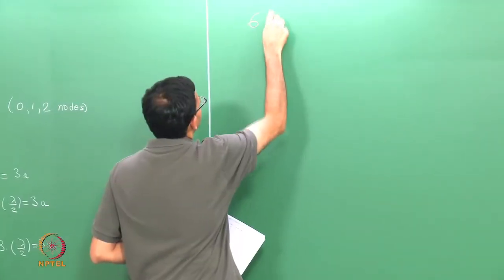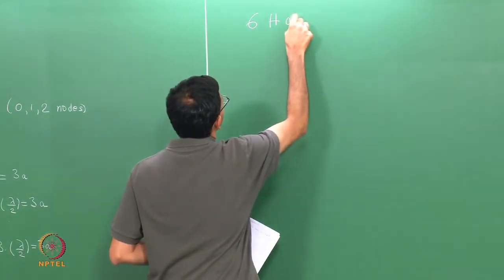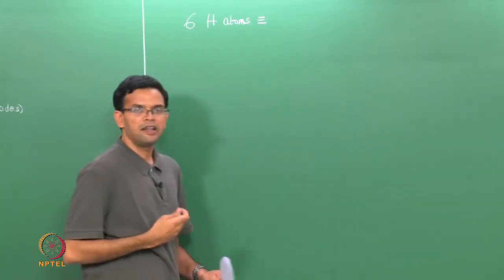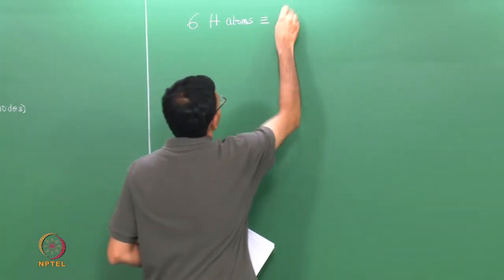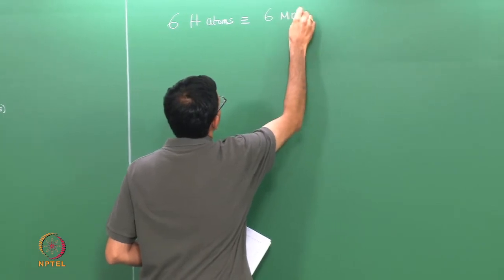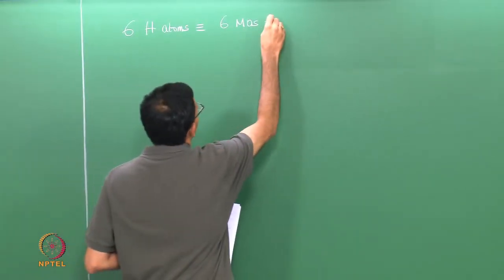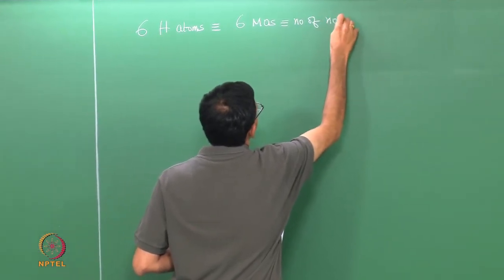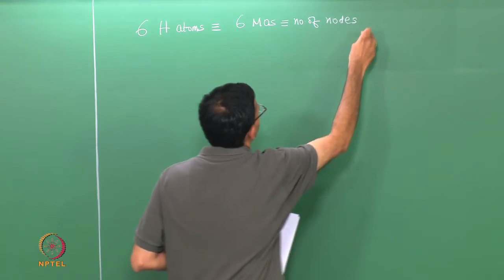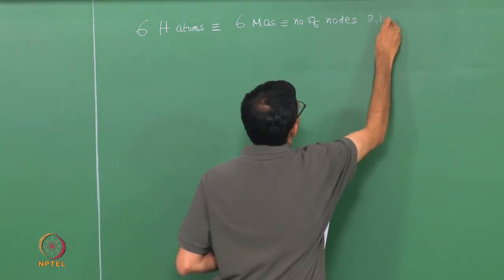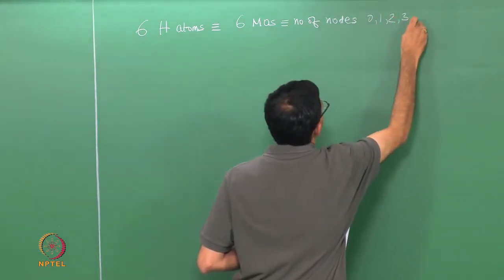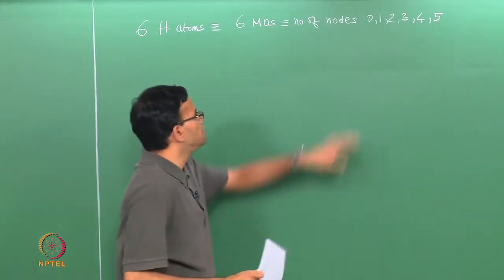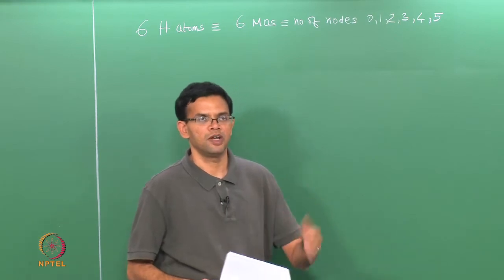Now we have 6 hydrogen atoms forming 6 molecular orbitals. The number of nodes will go from 0, 1, 2, 3, 4, and 5 - so you have 6 of these going from 0 to 5.